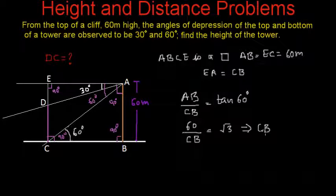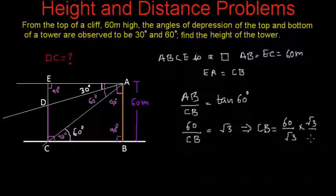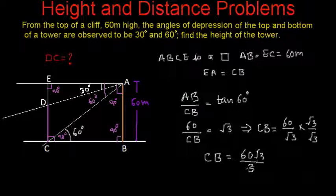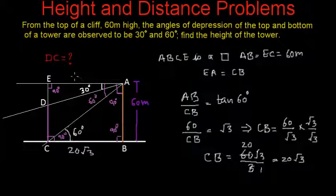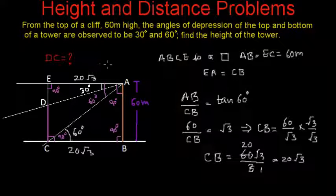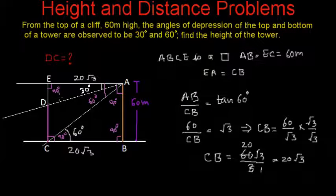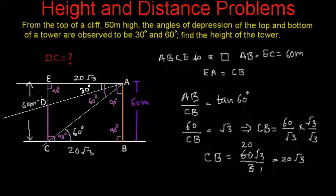The value of AB is 60 meters and tan 60 is root 3. So CB is equal to 60 divided by root 3. Multiplying by root 3 over root 3, CB equals 60 root 3 divided by 3, which gives CB equal to 20 root 3. EA will also be equal to 20 root 3, since these are the two opposite sides of a rectangle. So AB is 60 meters, CB is 20 root 3, and EC is equal to 60 meters.